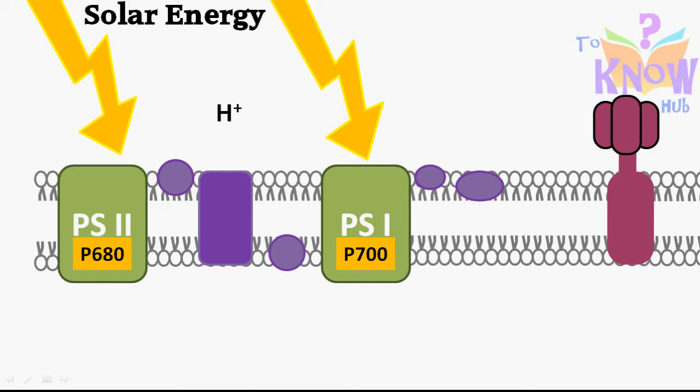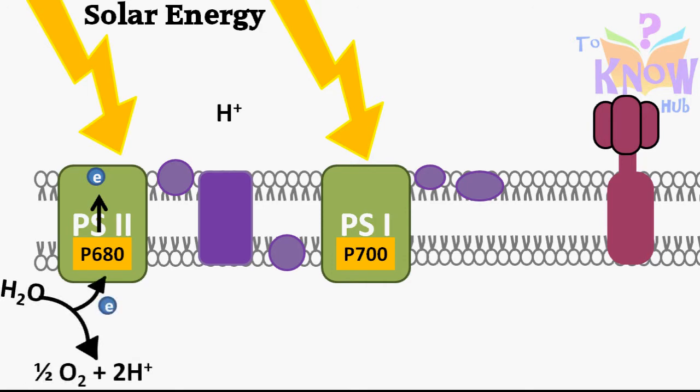The whole event starts when P680 chlorophyll absorbs solar energy and one of its electrons goes into a very high energy state. To compensate for that electron, a water molecule is broken down. This produces oxygen and hydrogen ions, so oxygen is produced very early in photosynthesis.